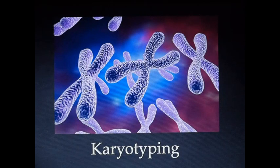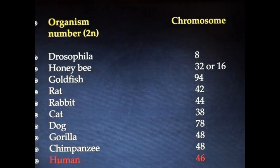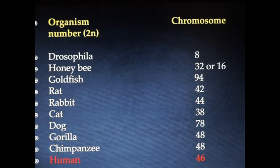Karyotyping is the process of obtaining chromosomes during metaphase of cell division. The metaphasic spread which is obtained is analyzed and photographed which is called a karyogram or ideogram. Each organism has got its own number of chromosomes present in each individual cell of the organism. These are the organisms which are often used for genetical studies. Like Drosophila having 8 chromosomes, honeybee 32, goldfish 94, rat is having 42 and rabbit 48, cat 38, dog 78, gorilla and chimpanzees are having 48 and we humans are having 46 number of chromosomes.